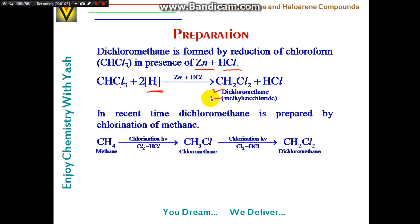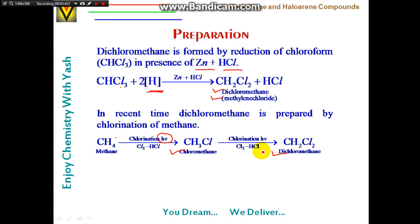In recent times, dichloromethane is prepared by chlorination of methane. In the presence of ultraviolet radiation, a free radical mechanism takes place absorbing photon energy. Methane first gives chloromethane, which on further chlorination gives dichloromethane.